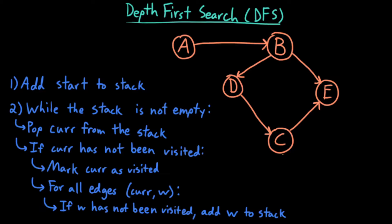One of the fundamental algorithms for traversing graphs is known as depth first search, or DFS. If I have some graph that's a collection of nodes connected with edges, and I have some starting point, DFS will start a traversal at the starting point and traverse down a given path as far as it possibly can before returning and traversing down another path. Unlike breadth first search, which explores nodes in layers away from the starting point, DFS explores as deep as it can down a single path before returning and going down other paths.